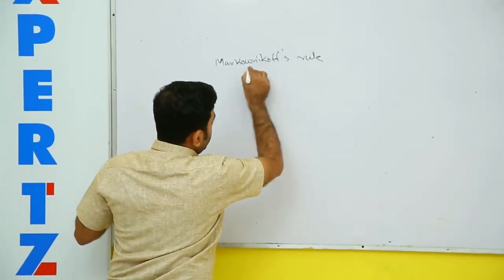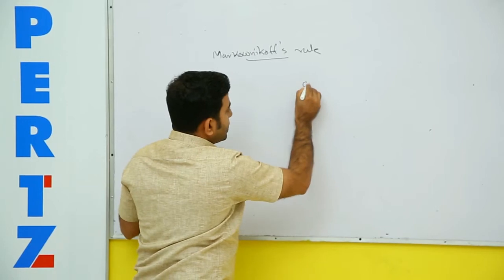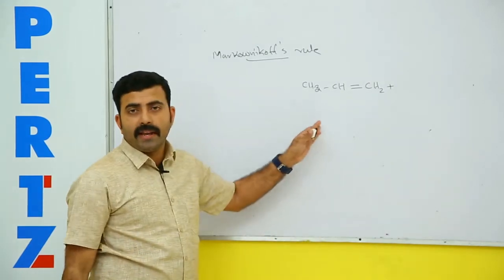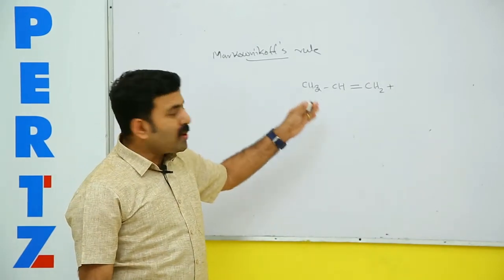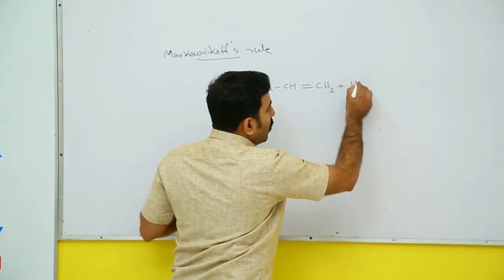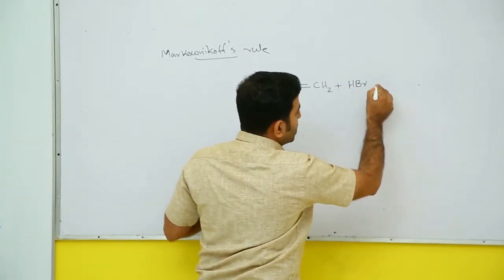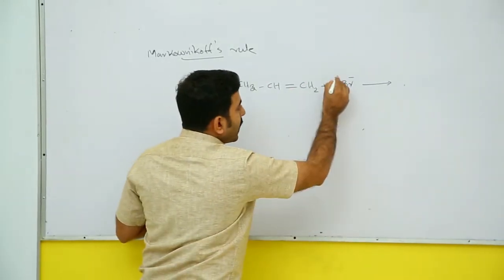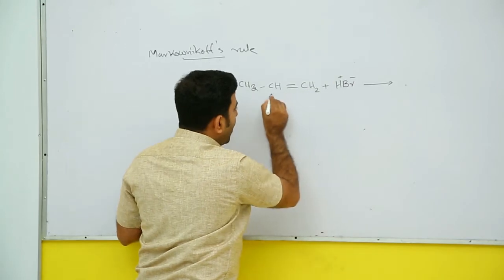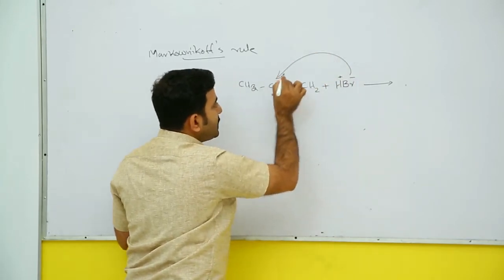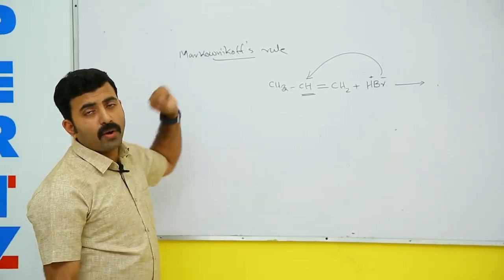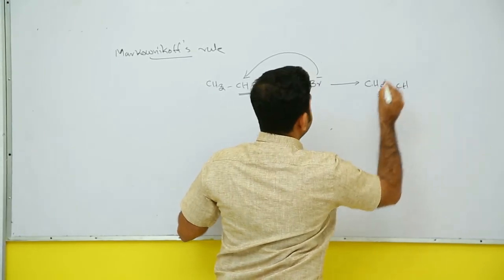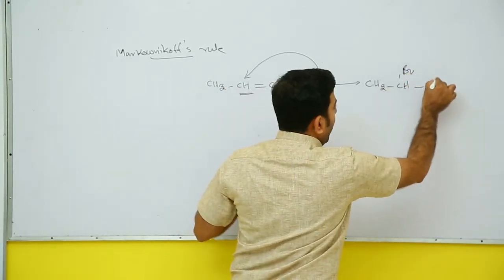Markovnikov's rule — everybody knows that for CH3-CH=CH2, an unsymmetrical alkene, when HBr or a hydrogen acid is added, the negative part of the addendum goes to the carbon atom which contains the less number of hydrogen atoms. This is the basic rule, known as Markovnikov's rule. So we will write the major product as CH3-CHBr-CH3.